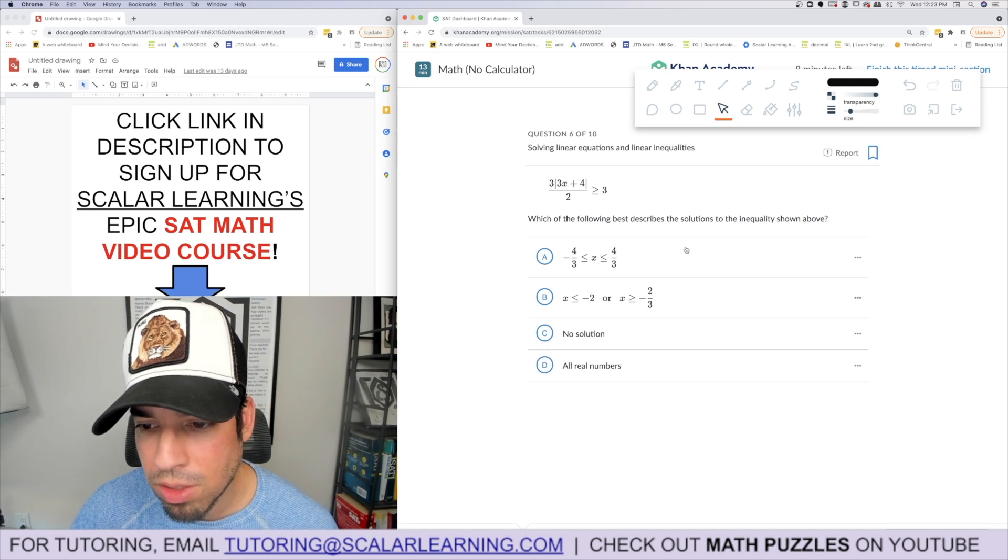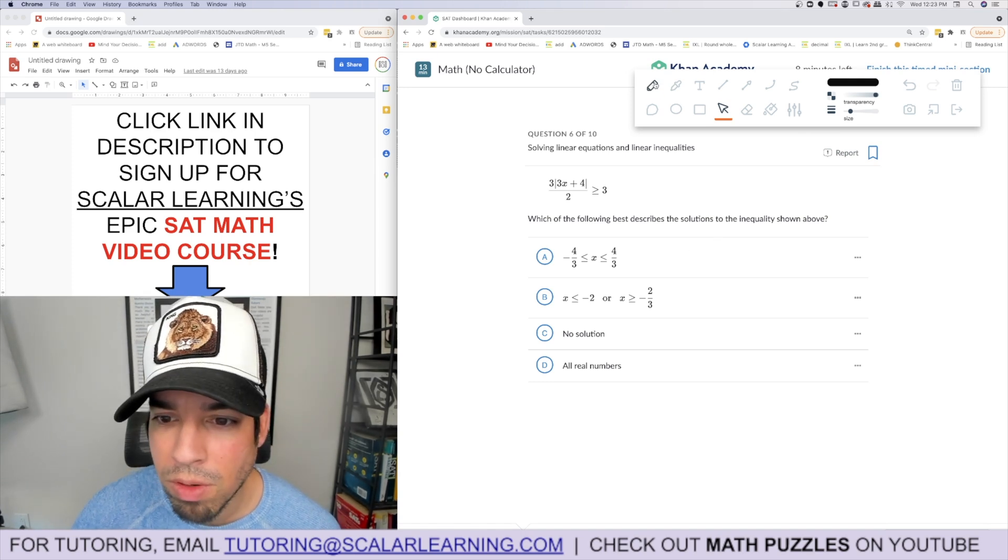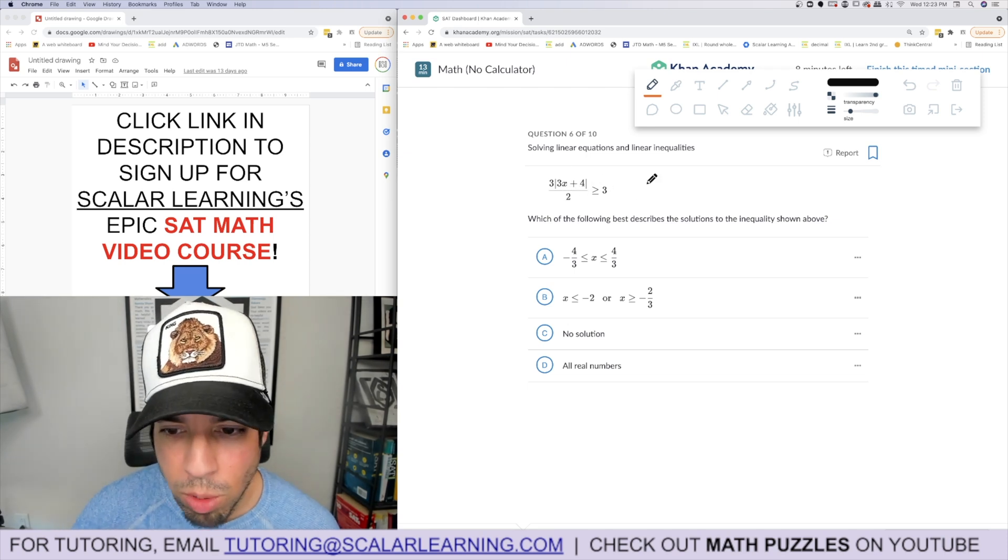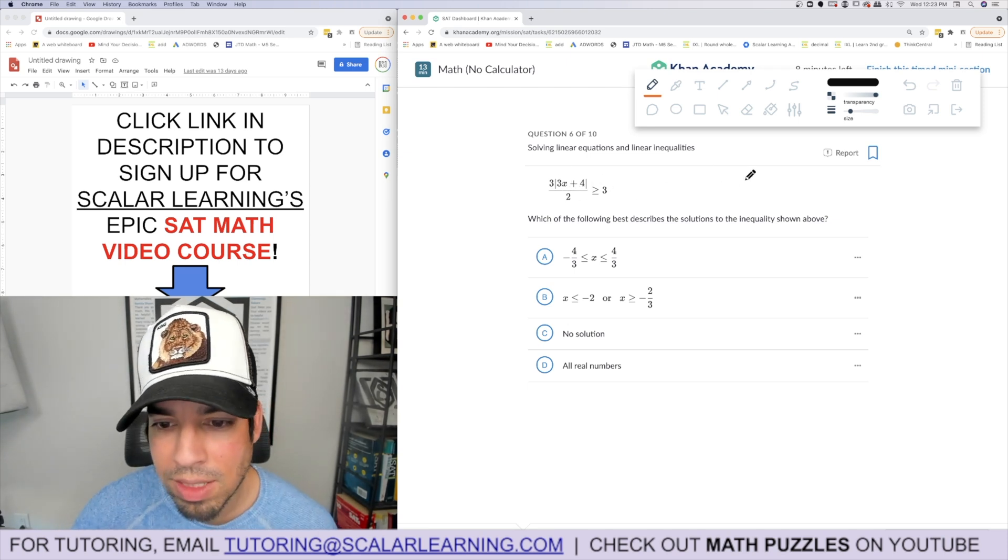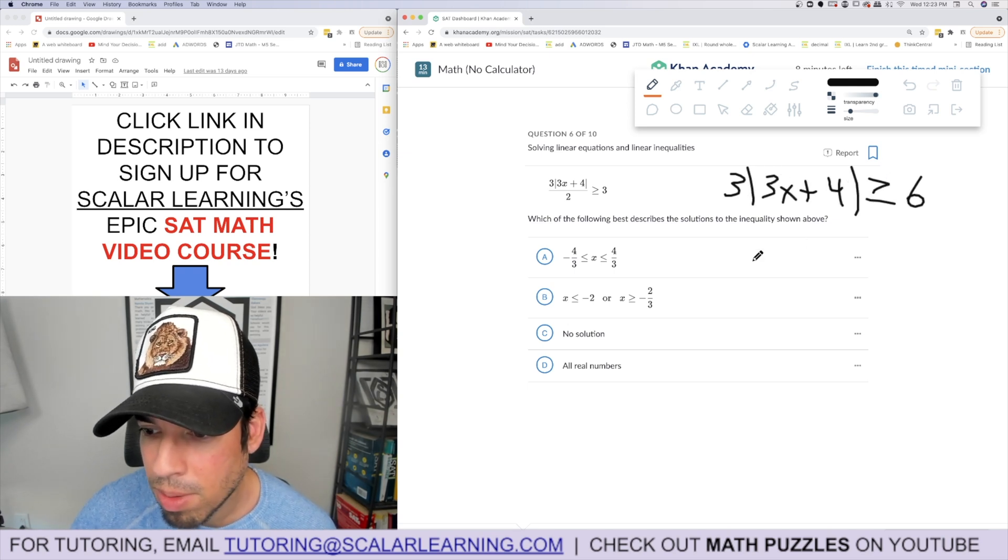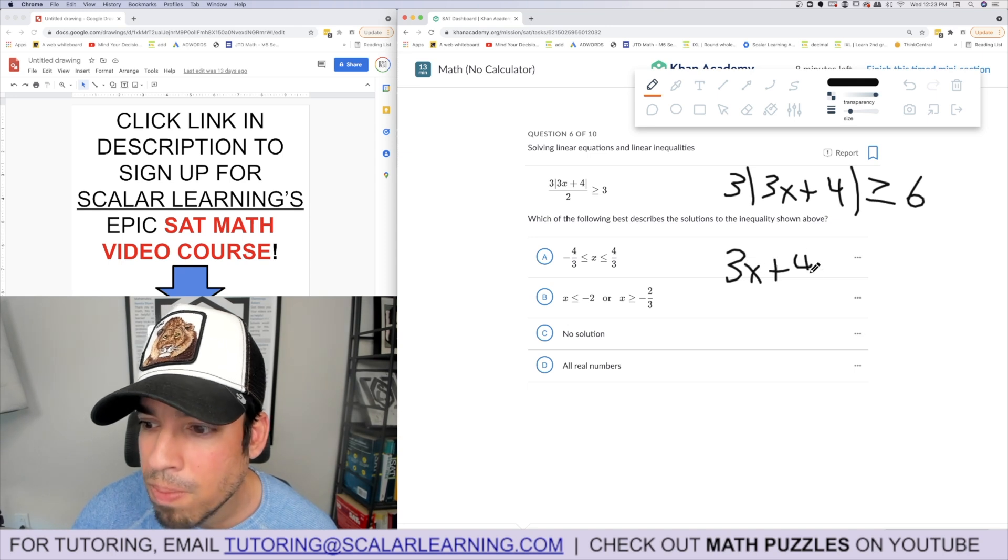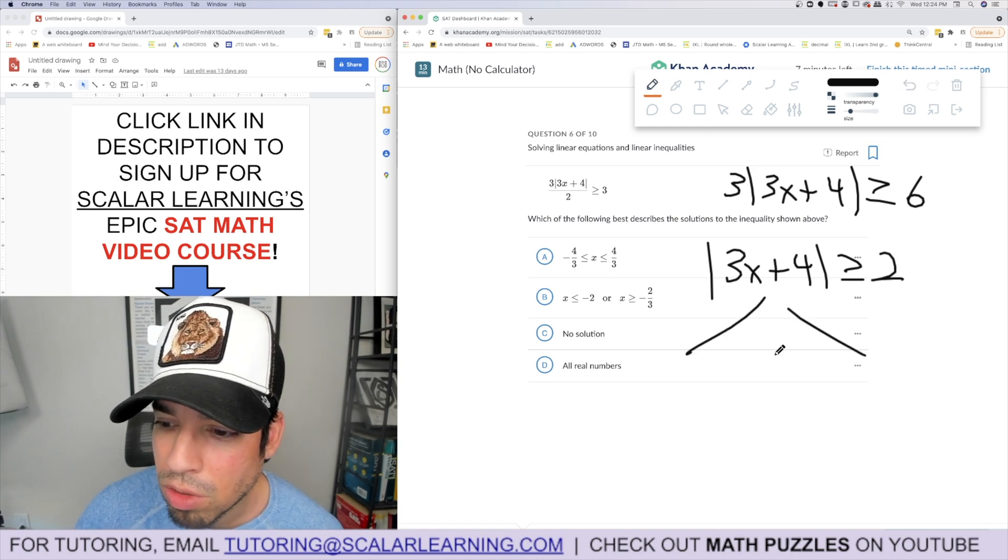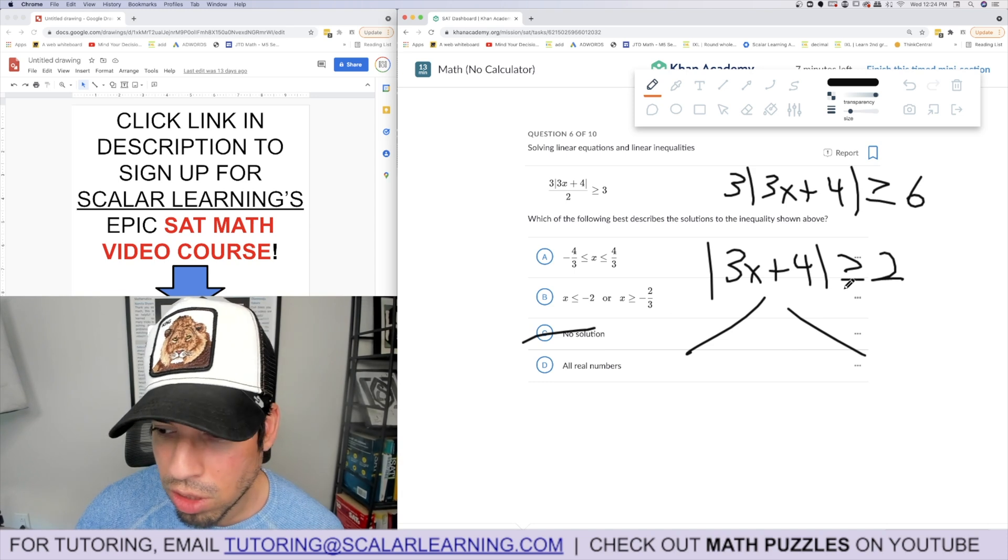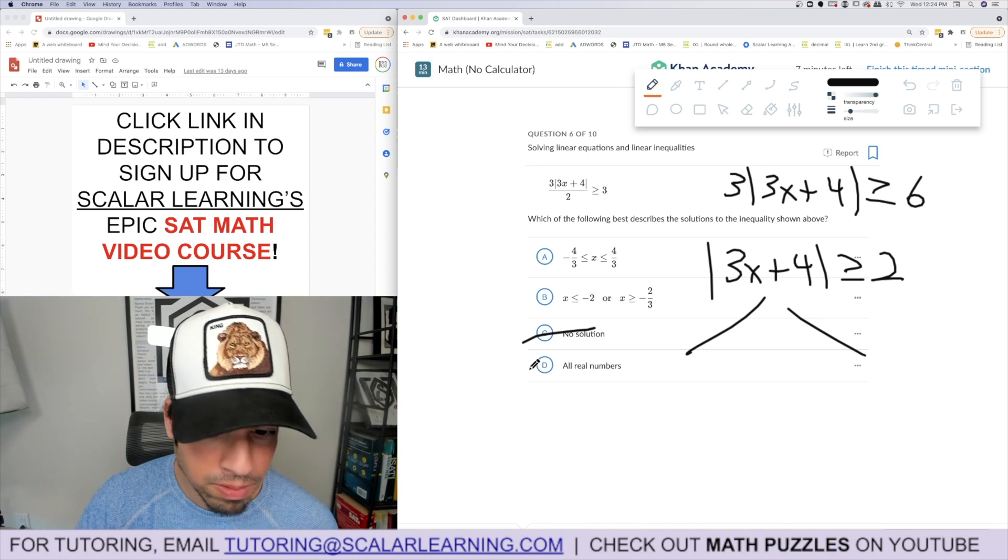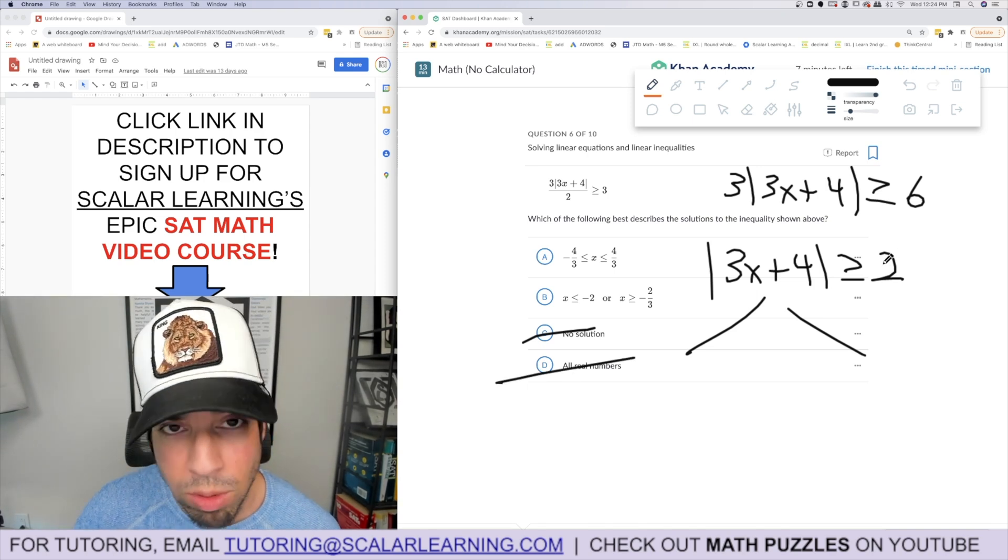Which of the following best describes the solution to the inequality shown above? Let's always isolate the absolute value, so multiply both sides by three, which we get six is greater than or equal to... six divided by three, three x plus four is then greater than or equal to two. Then we split it into two solutions. It's not no solution because that would only been if it was like, you can't have greater than or equal to be no solution. It's not all real numbers because that would only be if this was negative.